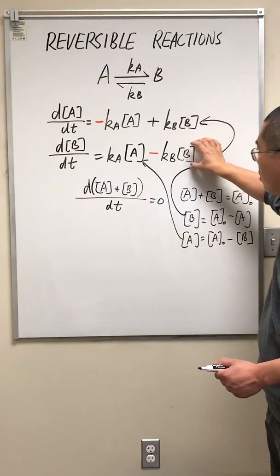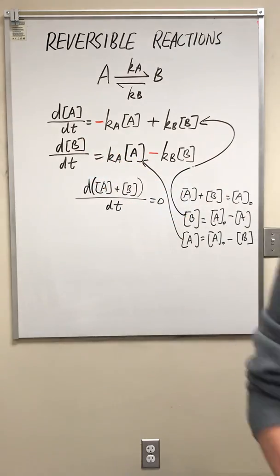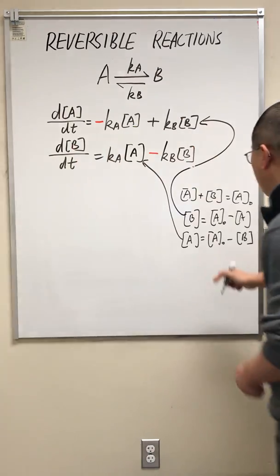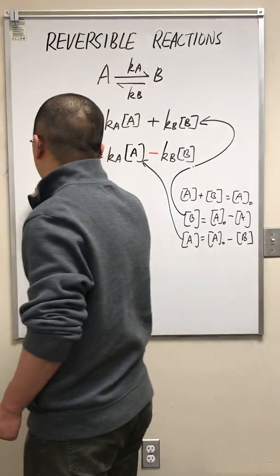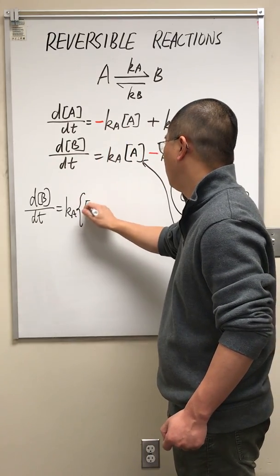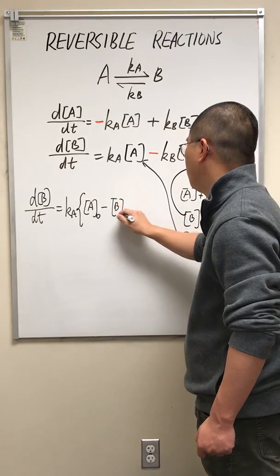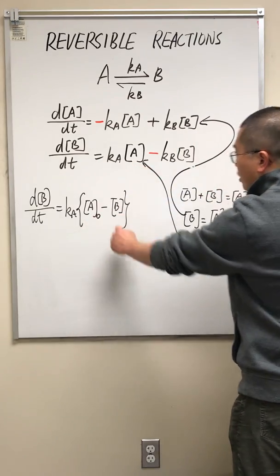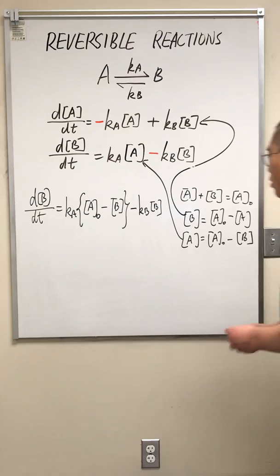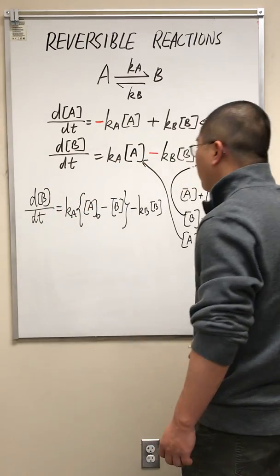I'm going to use this equation to get the expression for how B changes with time. So A is A0 minus B, where A0 is the initial concentration of A. Substituting, we have A0 minus B for A, and then we have A0 minus kA times B, plus kB times B. We have two variables here: time and the concentration of B.